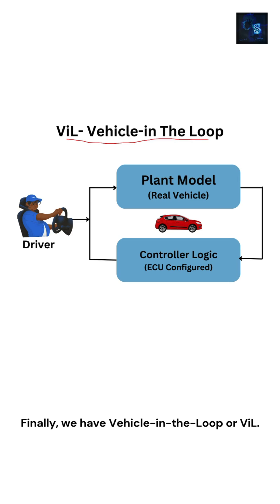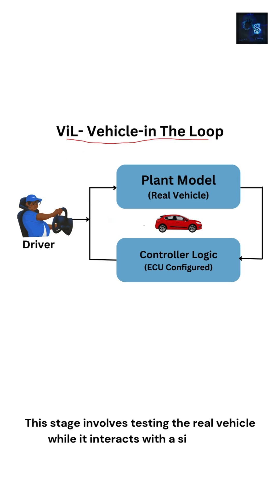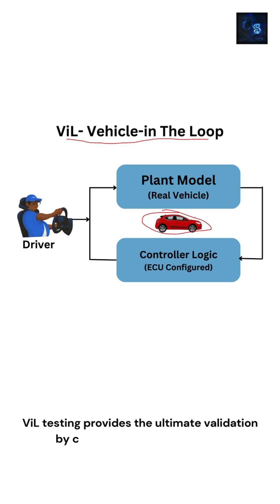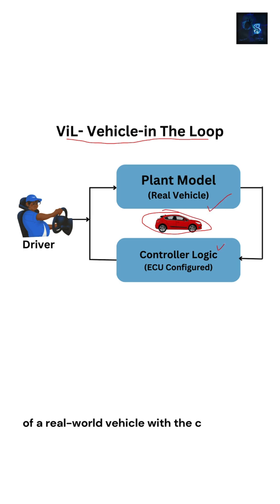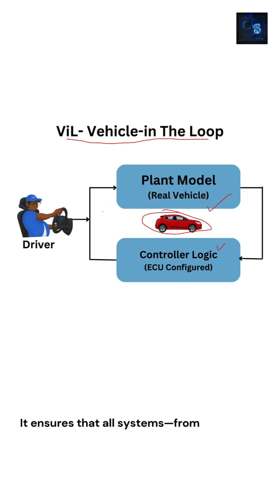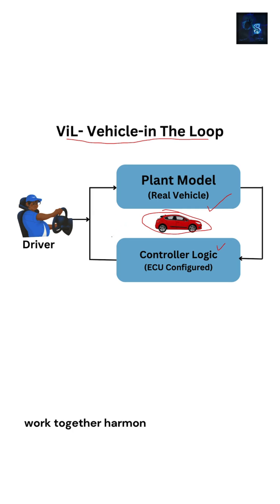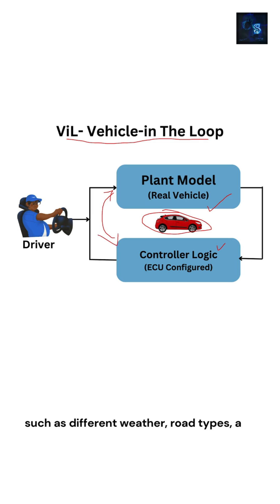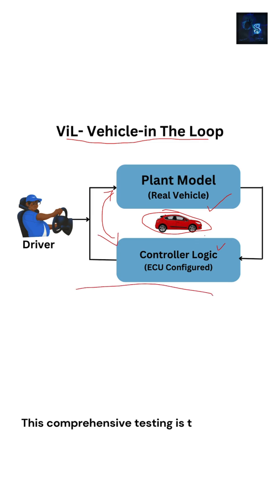Finally, we have Vehicle in the Loop, or VIL. This stage involves testing the real vehicle while it interacts with a simulated environment. VIL testing provides the ultimate validation by combining the complexity of a real-world vehicle with the control and repeatability of simulation. It ensures that all systems, from the ECU to the vehicle dynamics, work together harmoniously under various simulated conditions such as different weather, road types, and traffic scenarios. This comprehensive testing is the final step before a vehicle goes into production.